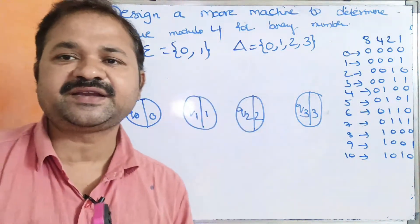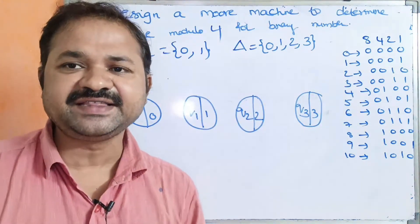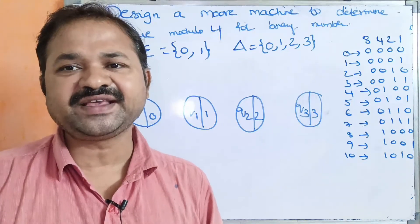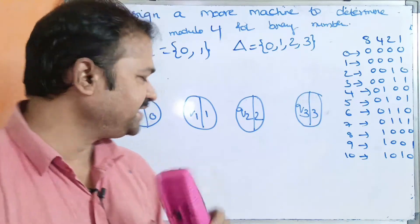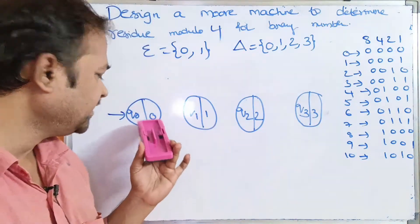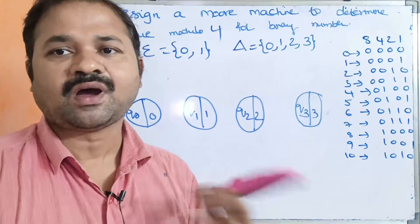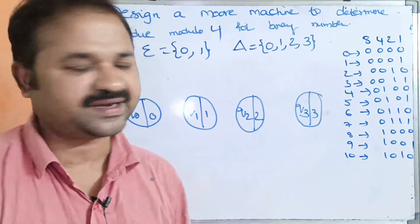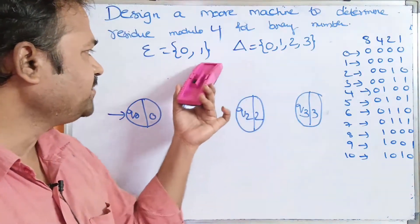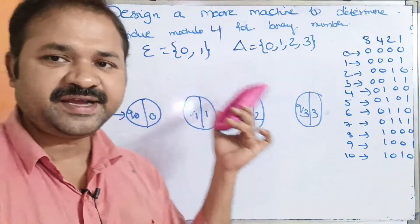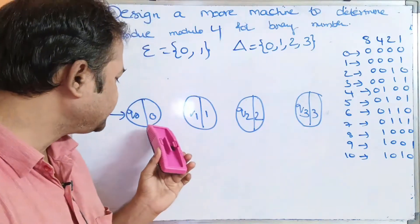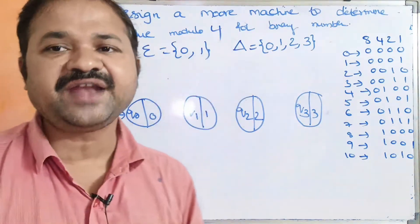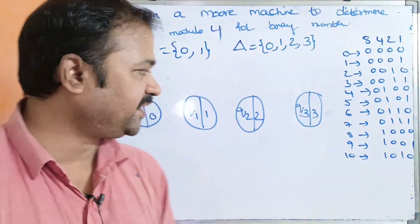A Moore machine is essentially constructing a DFA. In a DFA, each state must use all the symbols present in the alphabet. Here the input alphabet contains 2 symbols, so each state must use 0 and 1.